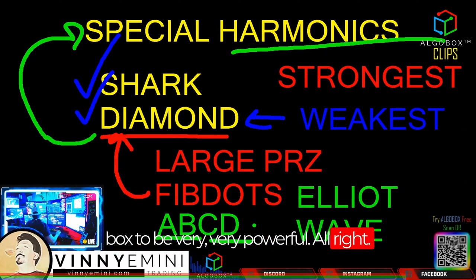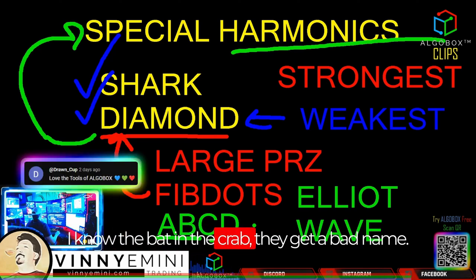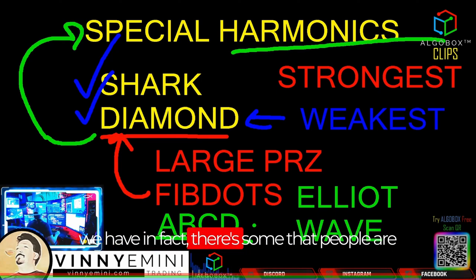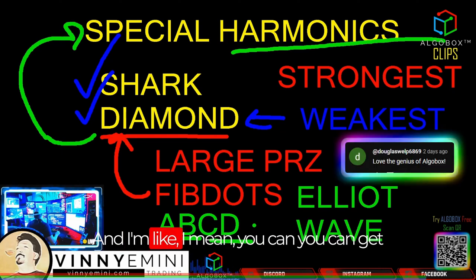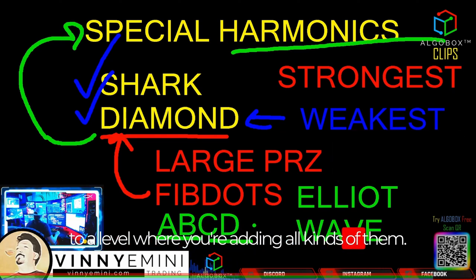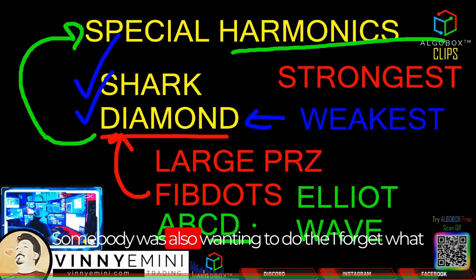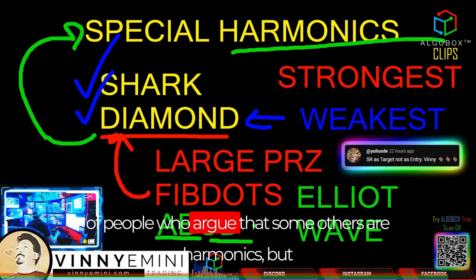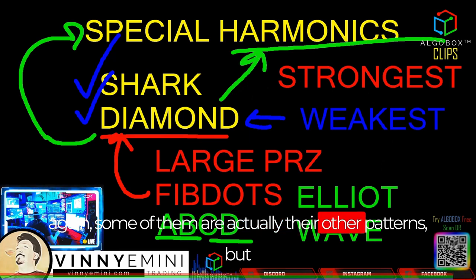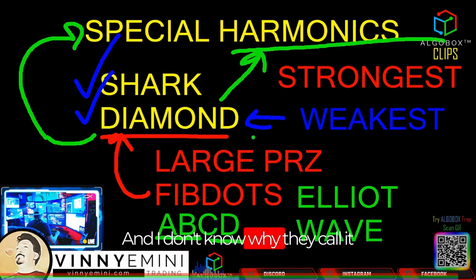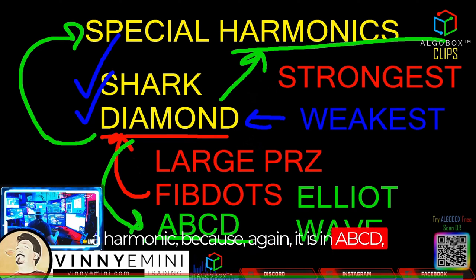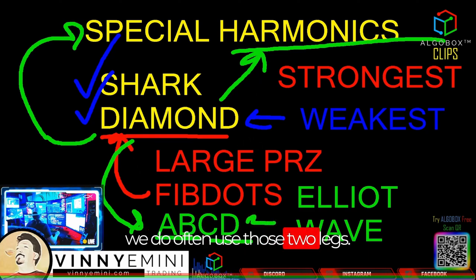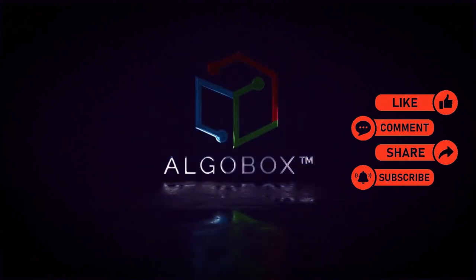You might feel sorry for the bat and the crab — they get a bad name, but yes, we have all of our little animal names. Some people ask, "Vinnie, why don't you add the wolf wave?" I mean, you can get to a level where you're adding all kinds of them. I have thought about adding the wolf wave; somebody was also wanting to add the triple — I'll forget what that one's called. There are a lot of people who argue that some others are harmonics, but some of them are actually other patterns just renamed, like the diamond. I don't know why they call it a harmonic, because again it is an ABCD — hence why it is one of the weakest — but it is in our repertoire and we do often use those two legs.